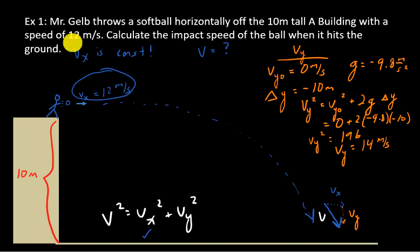I know Vx from the problem. Let's use our Pythagorean theorem. So V squared equals Vx squared plus Vy squared. That equals 12 squared plus 14 squared. Well, 12 squared is 144. 14 squared is 196. You add all that up, you get 340.